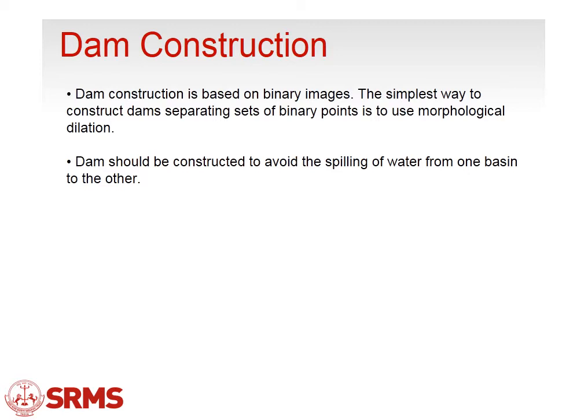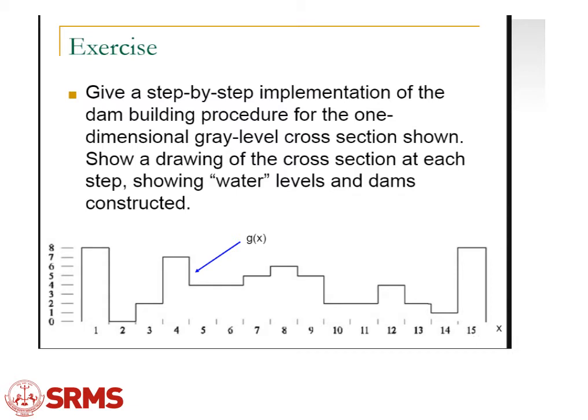The watershed algorithm is defined using basin architecture — a riverside operation and scaling pattern made by the upstream and downstream flow of the river. In this format, we have values ranging from 0 to 8 on one axis, with pixel values, and on the x-axis values from 1 to 15 in a random pattern defined by the function G(x). This gives a step-by-step implementation of the dam building procedure for a one-dimensional gray-level cross section shown in the figure.